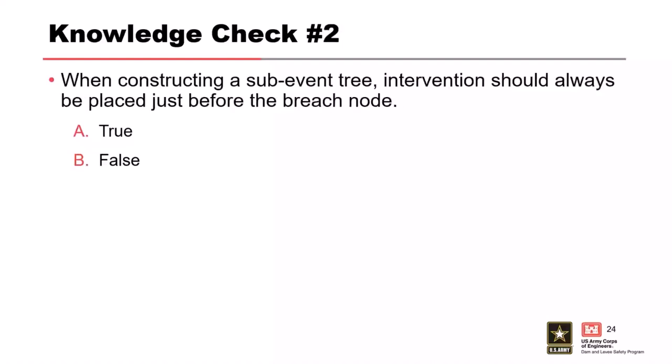Knowledge check two: 'When constructing a sub-event tree, intervention should always be placed just before the breach node.' True or false? The correct answer is false. Think about the physical manifestation of the event tree and the progression of the failure mode. Depending on what failure mode you're looking at, placing intervention just before the breach node may not make sense. For overtopping, you might intervene right after the flood loading event. It's always helpful to think about the physical progression of the failure mode and decide where the intervention node fits best.